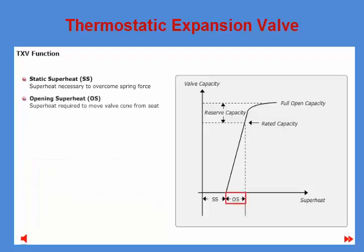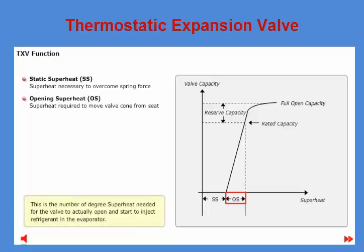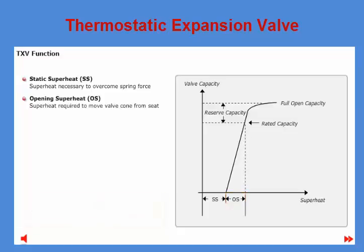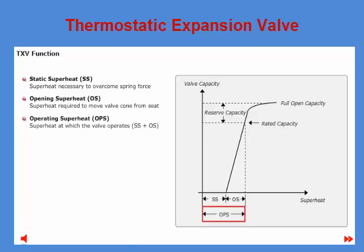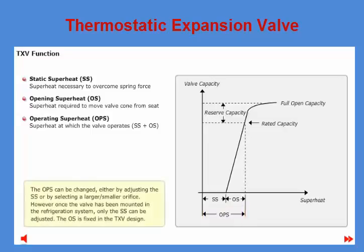The second part is the opening superheat, or OS — the number of degrees of superheat needed for the valve to actually open and start injecting refrigerant into the evaporator. The combination of the two superheat values is referred to as operating superheat, or OPS, or total superheat. This is the value the customer or fitter can measure on their refrigeration system. The OPS can be changed either by adjusting the SS or by selecting a larger or smaller orifice. However, once the valve has been mounted in the refrigeration system, only the SS can be adjusted; the OS is fixed in the TXV design.